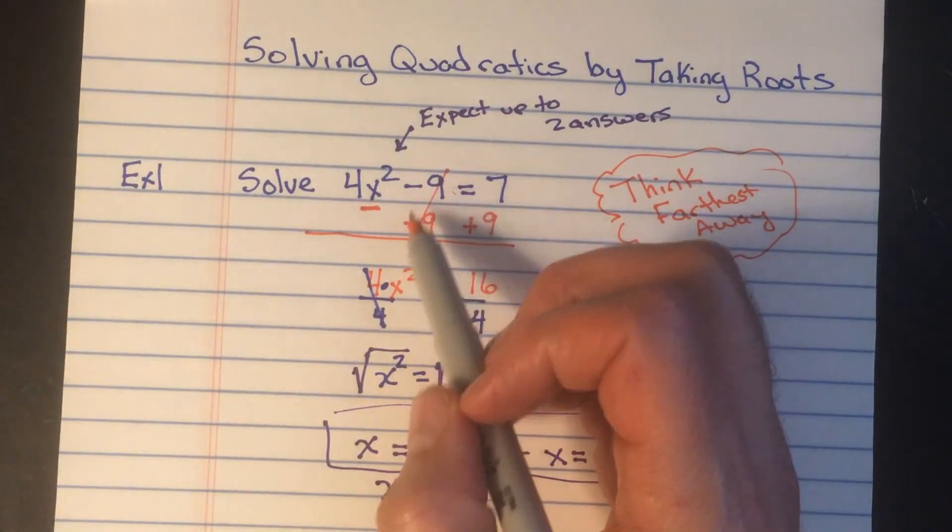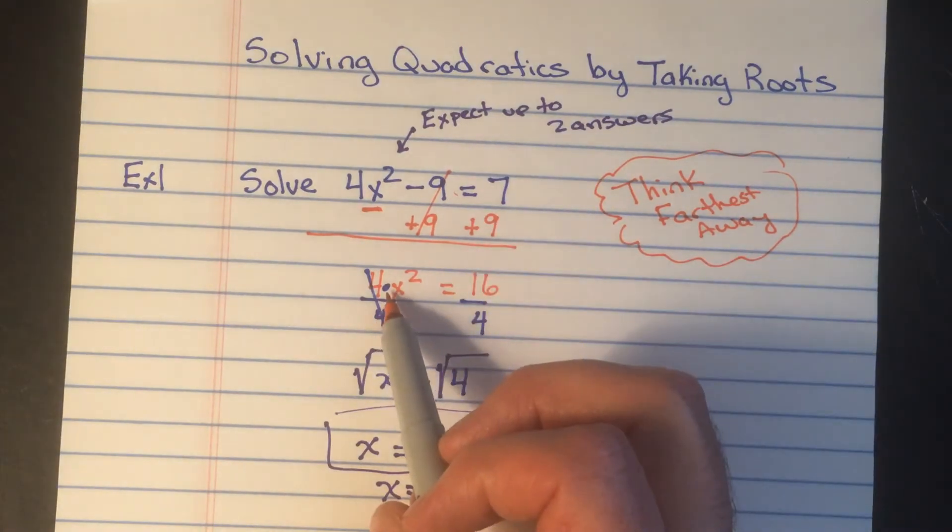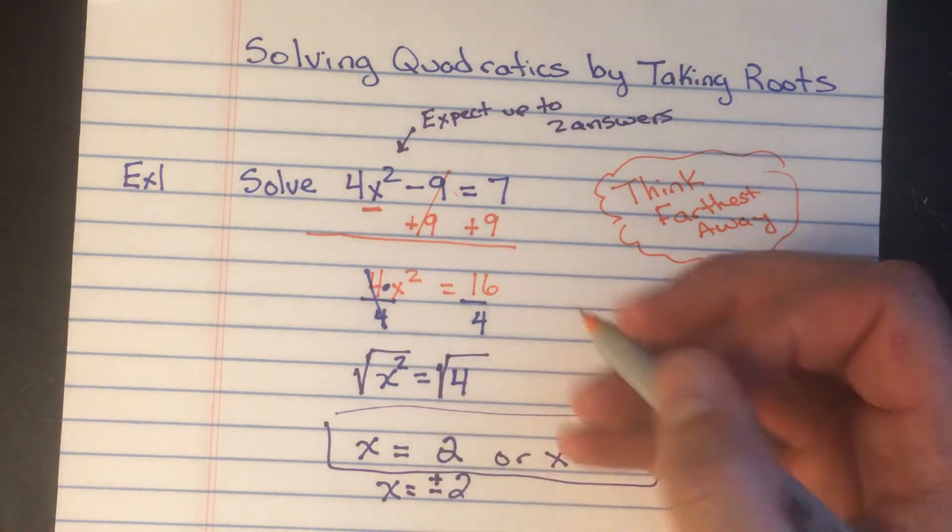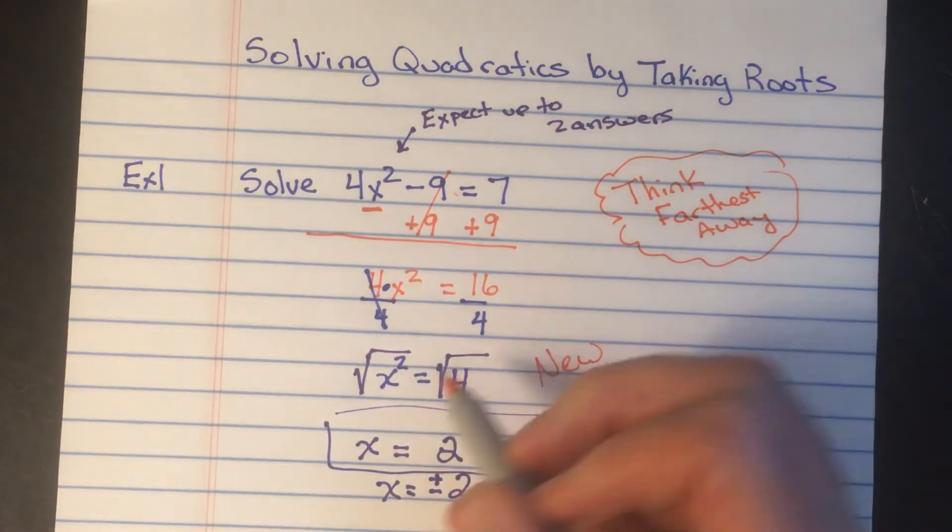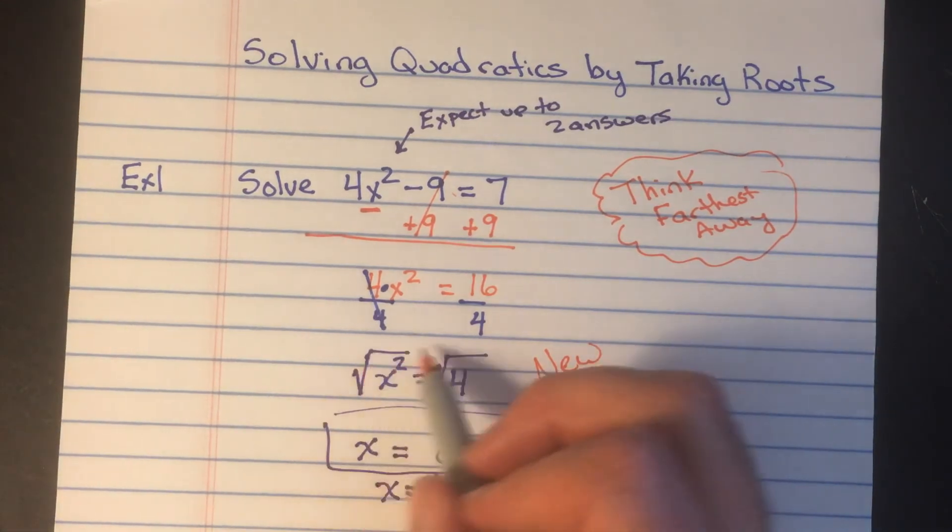So going back here it is. Farthest away is the minus nine, so we added nine to both sides. Then farthest away was the times four, so we divided by four. And then the new thing today, the new part, is how do we get rid of an x squared if that's the only thing bothering the x? We square root it.